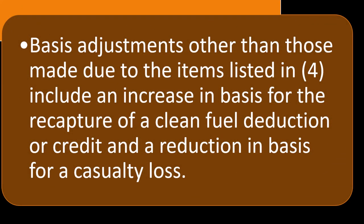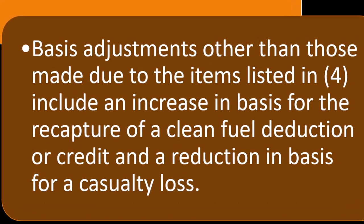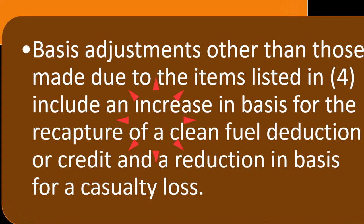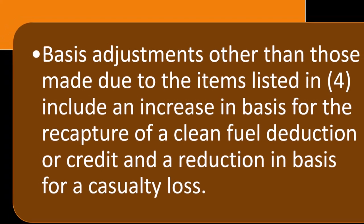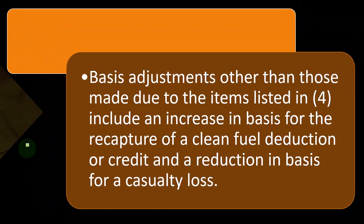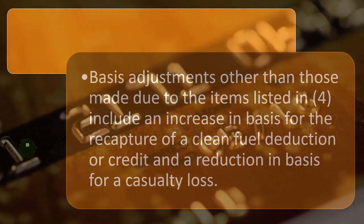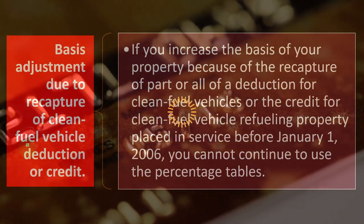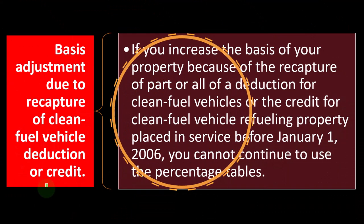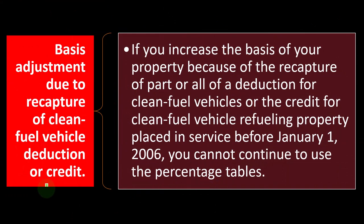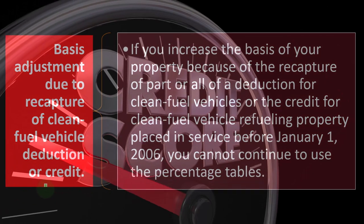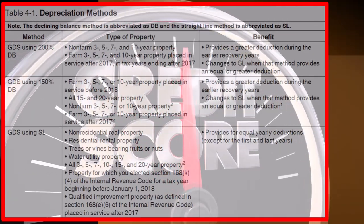Those are more unusual situations where some other benefit is happening — interplay between the adjusted basis being allocated and another benefit like a credit that could adjust the basis. Otherwise you'd be double-dipping, getting both an expense and a credit. Basis adjustments due to recapture of a clean fuel vehicle deduction or credit won't be covered in detail here as it's a somewhat unusual situation.